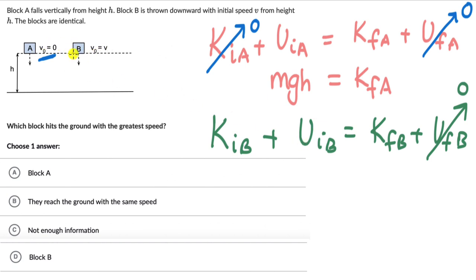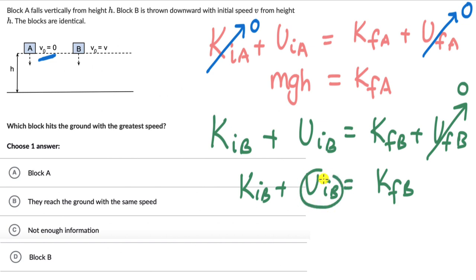Block B also has the same amount of potential energy as block A. So the final kinetic energy for block B is not just equal to the potential energy — it is also equal to the kinetic energy that block B has initially. This will be Mgh, and you are adding something to Mgh. So the final kinetic energy will be more for block B. Because the final kinetic energy is more for block B, its speed will also be more when it reaches the ground.